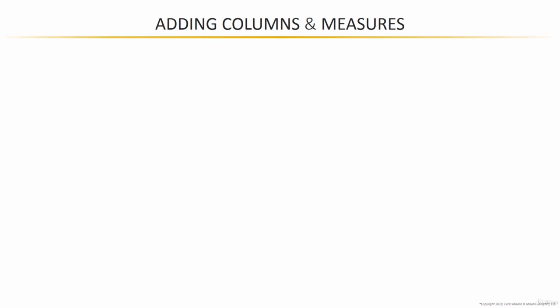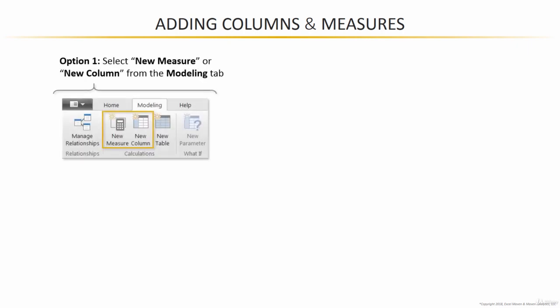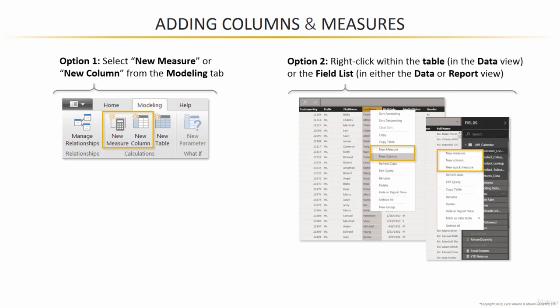A quick note about adding calculated columns and measures to a Power BI file before we get our hands dirty and start creating some of our own. There are two options for adding columns and measures. Option one is to select either new measure or new column from the modeling tab. Option two is to right click from within the table in the data view or the field list, which is available in either the data or the report view, and choose to add a new measure or column from that menu.